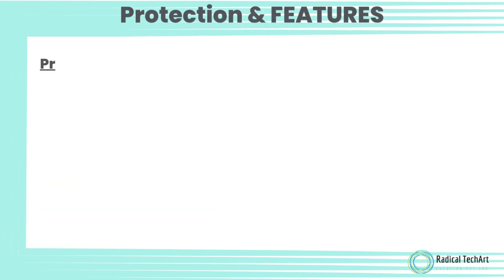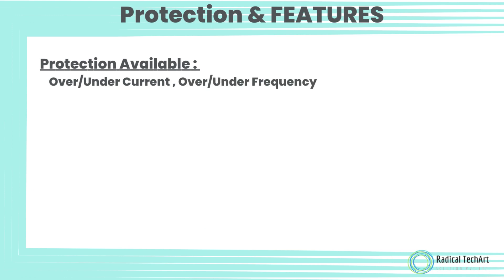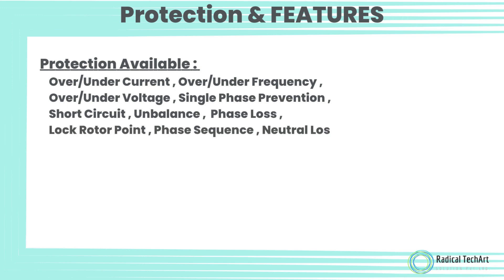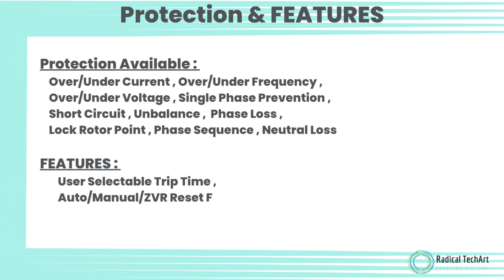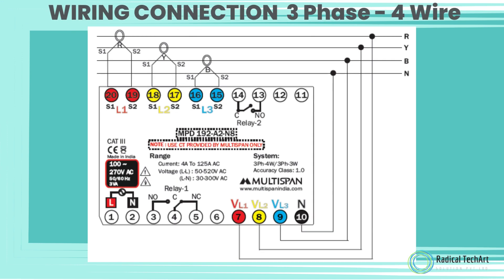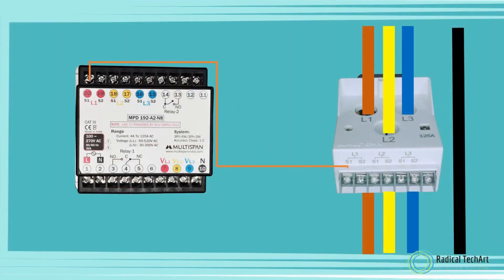Protection available: Over/Under Current, Over/Under Frequency, Over/Under Voltage, Single Phase Prevention, Short Circuit, Unbalance, Phase Loss, Lock Rotor Point, Phase Sequence, Neutral Loss. Features include user-selectable trip time, Auto/Manual ZVR Reset Function, True RMS Measurement. Wiring connection supports 3-Phase 3-Wire and 3-Phase 4-Wire configurations.